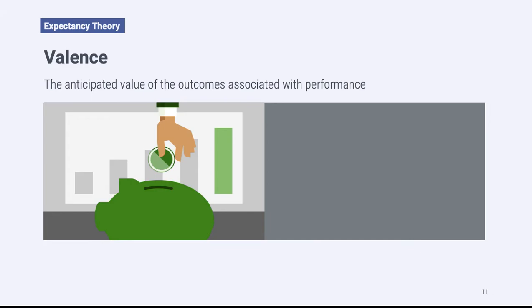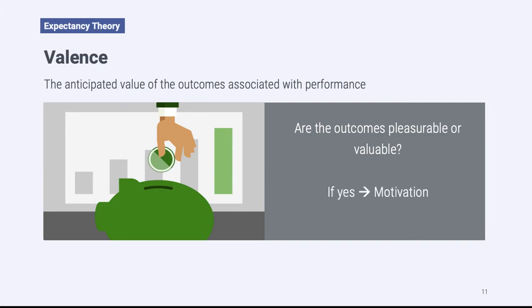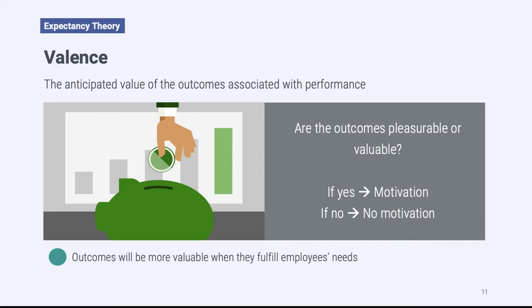The third component of expectancy theory is called valence. Valence looks at the outcome itself and whether or not that outcome is desirable — is it valued by employees? We look at the outcome and ask: is it pleasurable or valuable? If it is, we're going to feel motivated. If it's not pleasurable or valuable, we're not going to feel motivated. Outcomes will be more valuable when they fulfill employees' needs.